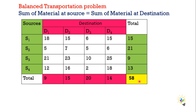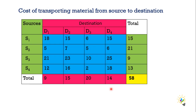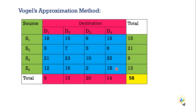In my further videos, I will discuss how to solve the transportation problem if it is unbalanced. The cost of transporting material from source to destination is given in blue color. Now we will start Vogel's Approximation Method.